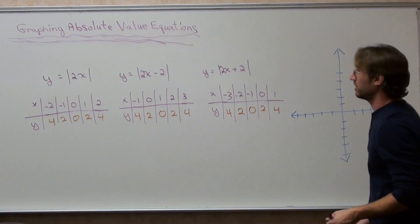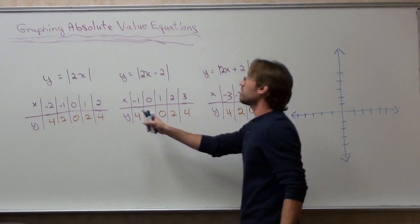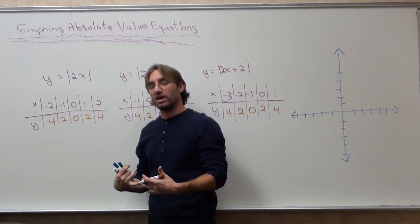So I'm going to graph the first one first, absolute value of 2x, and it actually rises up quicker. Putting a number in front of the x makes it rise up quicker than it would have otherwise.